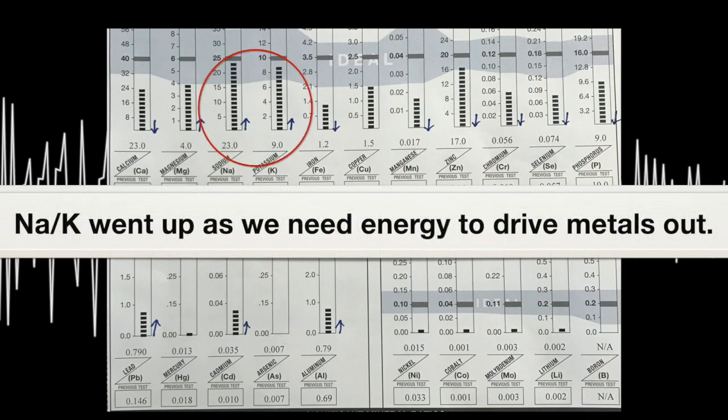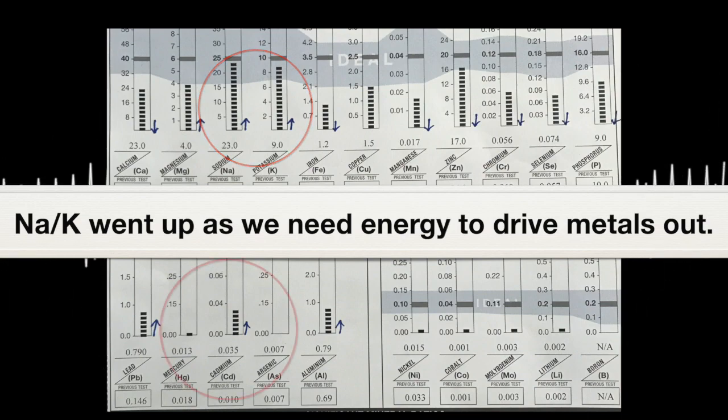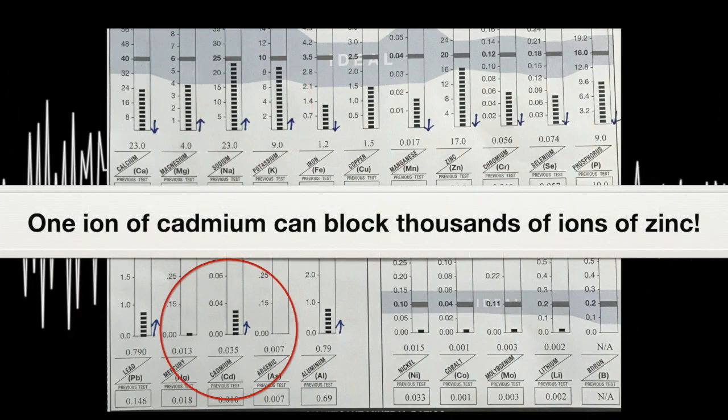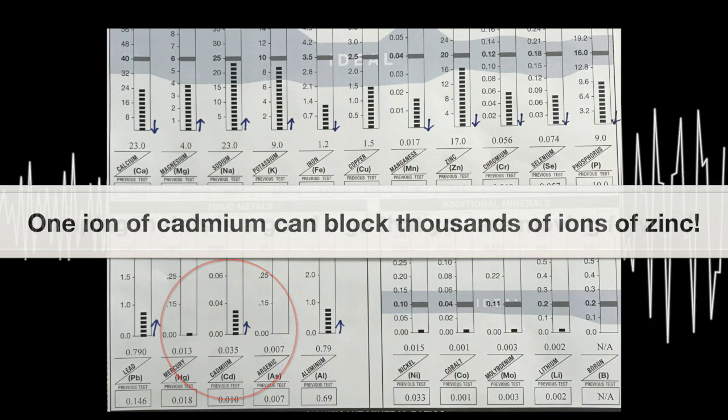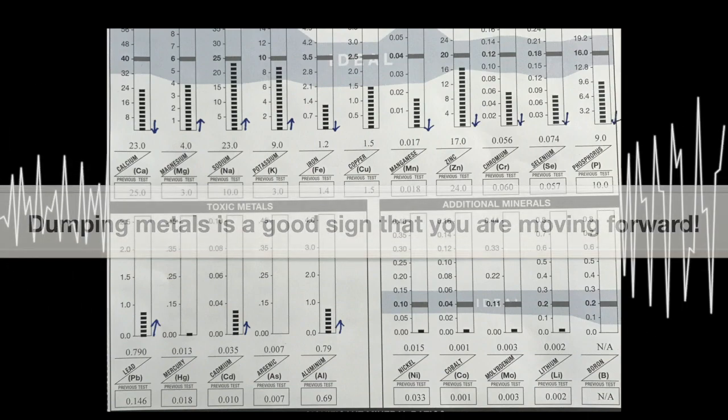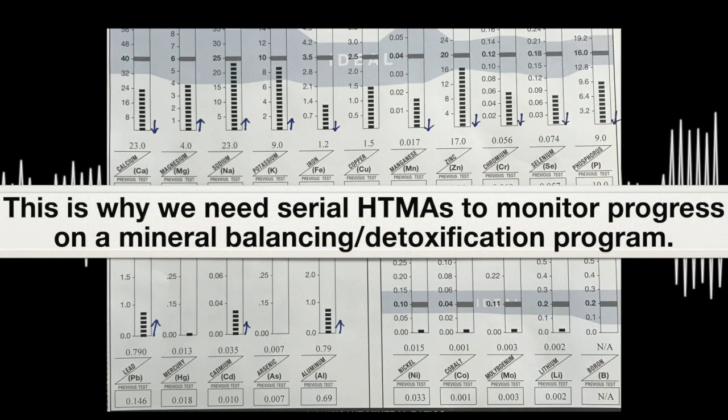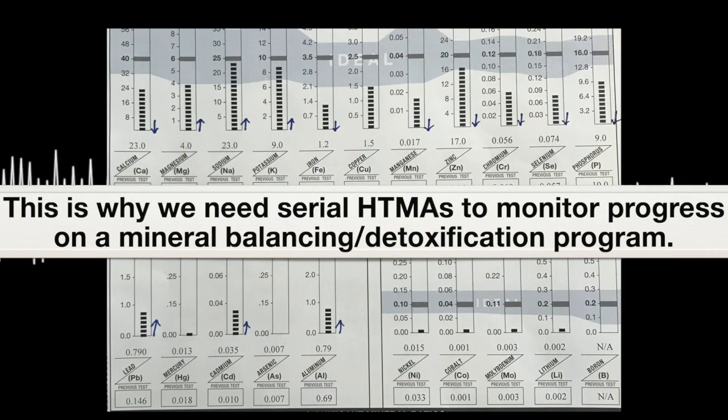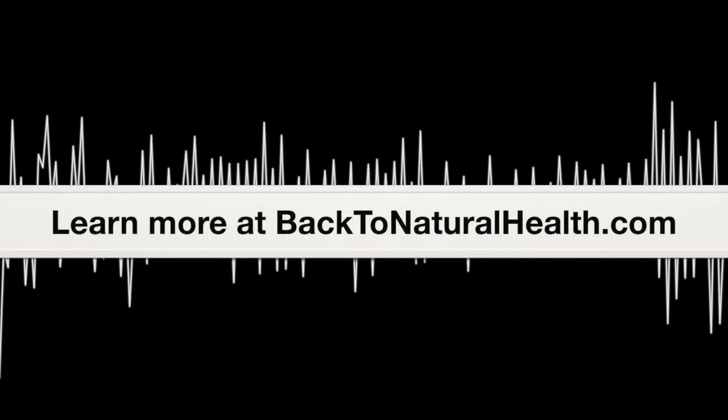So again, you probably may notice that the sodium potassium went up because you need energy to drive these metals out. And so remember, I said that cadmium blocks zinc. Cadmium can block one ion of cadmium, can block thousands of ions of zinc. And so just by these metals coming out is really a celebration. And we're moving her forward. But we still have a lot of work to do. So this is why we do serial hair tissue analyses as we monitor her progress during a mineral balancing detoxification program. So that's what I wanted to report today. And thank you for taking the time to listen to this short case study.